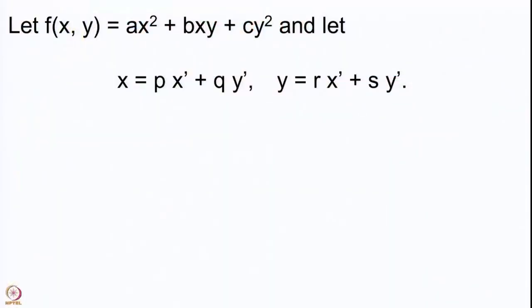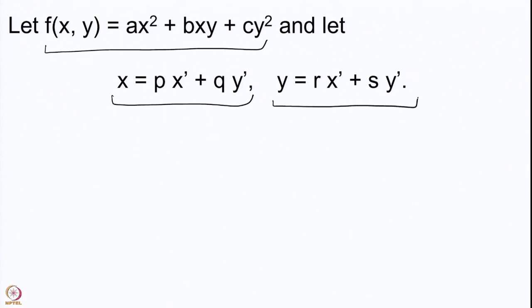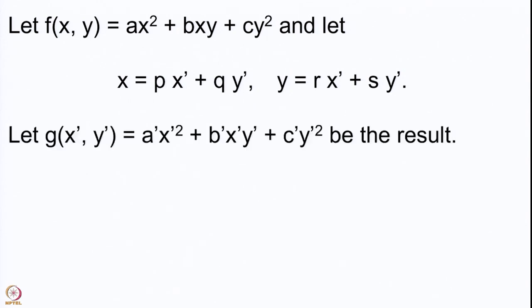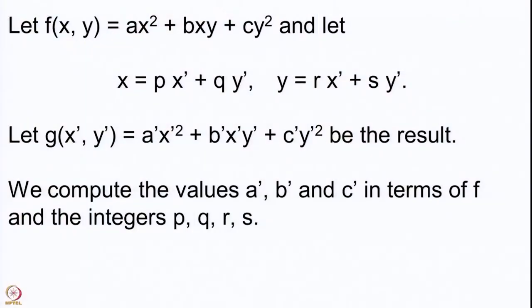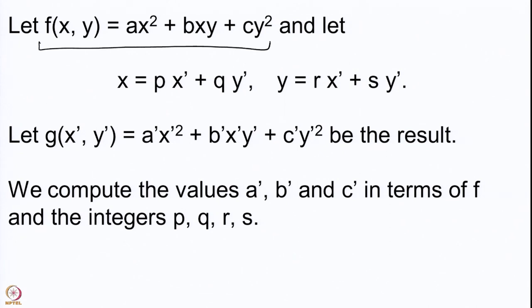We start with an integral binary quadratic form Ax² + Bxy + Cy² and apply the transformation: x goes to px' + qy' and y goes to rx' + sy'. What happens is that we get a different integral binary quadratic form G, with different coefficients A', B', and C'. We want to explicitly determine their values in terms of the original numbers A, B, C, P, Q, R, S.